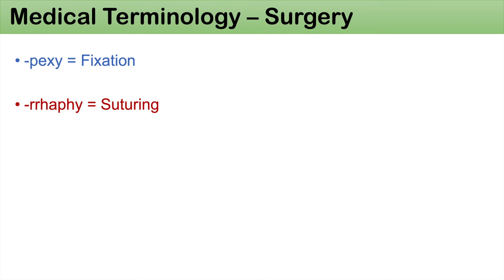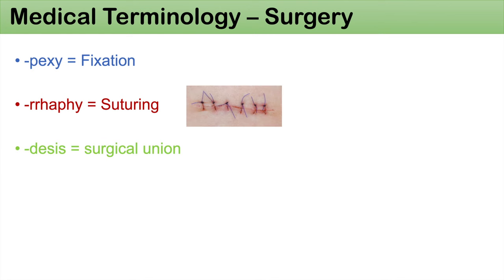The suffix -raphe, or raphe, means suturing. So you can think of enteroraphe — suturing of the intestines. The suffix -desis means surgical union. You can think of fasciodesis, a surgical union of the fascia.